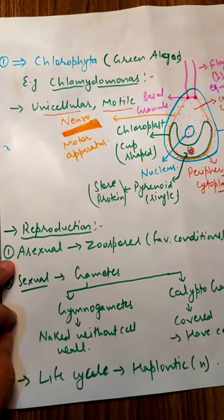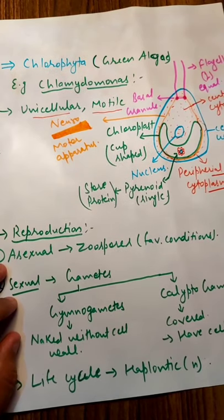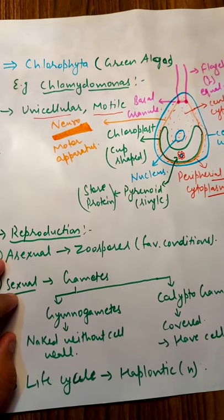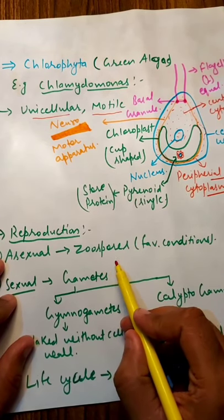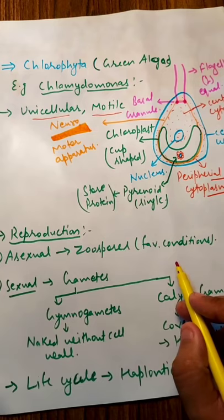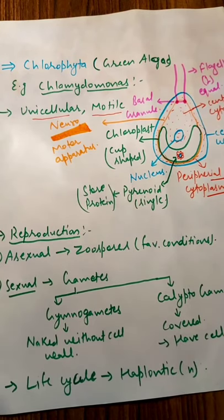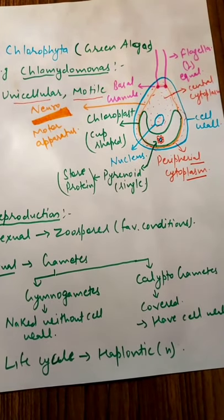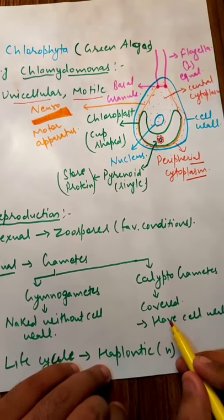Reproduction can be asexual type as well as sexual type. In asexual type, Chlamydomonas will form the zoospore. Zoospore favorable condition में बनते हैं, जबकि general spore unfavorable condition में बनते हैं। Sexual reproduction के अंदर gamete formation होता है। Gamete दो तरह के हैं: gymno gametes, जिनके बाहर cell wall नहीं है — naked without cell wall — और crypto gametes जो covered हैं, have cell wall।